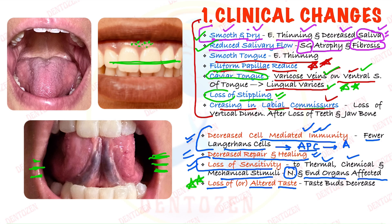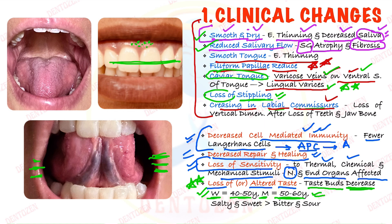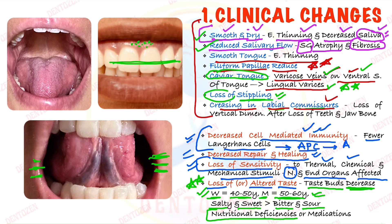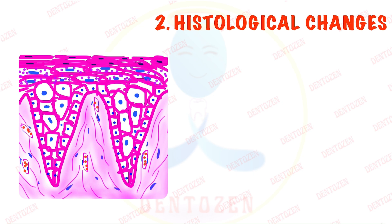Another very important change is loss of or altered taste perception. With aging, taste buds which help in taste perception decrease. This loss of taste is seen in women at age 40 to 50 years, and in men at 50 to 60 years. Initially there is loss of salty and sweet taste, followed by loss of bitter and sour taste. These taste changes may also be due to nutritional deficiencies or certain medications the person is taking.